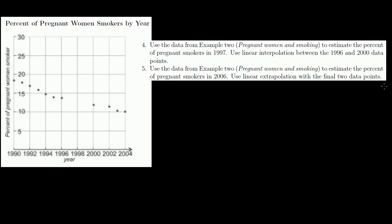Now let's do another example — here's a chart showing the percentage of pregnant women who are smokers by year. It's interesting: in 1990, around 18 or 19% of pregnant women smoked. By 2004, that had dropped to about 10%. So there's still a percentage of pregnant women who, unfortunately, smoke.